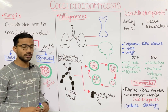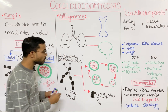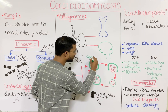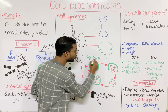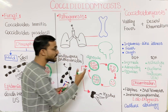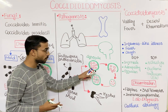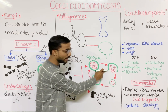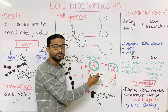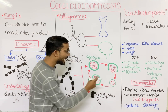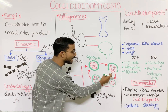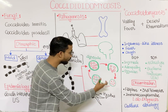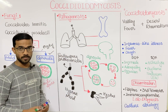Inside the spherule, you will see the presence of endospores. When the spherule wall ruptures, it releases the endospores. These endospores then go through different cycles and form another spherule — this process continues within the body.